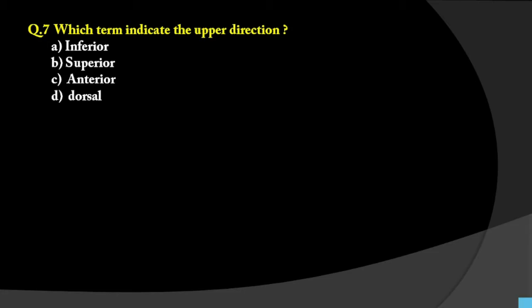Question 7: Which term indicates the upper direction? Options are inferior, superior, interior, or dorsal. Inferior means downward, superior means upward side, anterior means frontal side, and dorsal means the back side. Since upper direction is asked, the answer is superior.